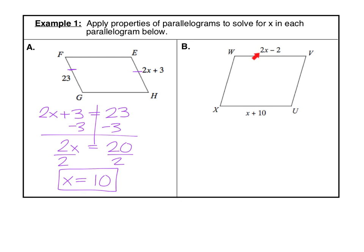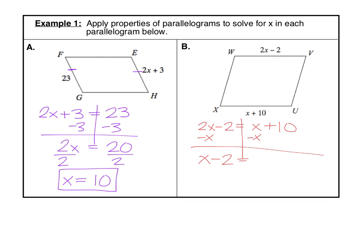In my second parallelogram, side WV is 2X minus 2 and side XU is X plus 10. Those are opposite sides, and by parallelogram property number one, opposite sides are congruent. So 2X minus 2 equals X plus 10. Since we have a variable on both sides, subtract X from each side to keep our variables positive. 2X minus X is X, so we get X minus 2 equals 10. Add 2 to each side and we get X equals 12.